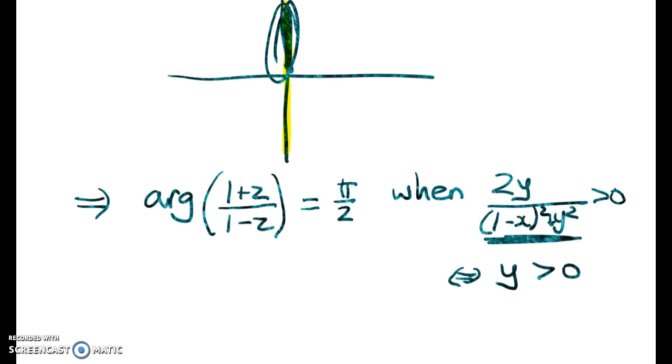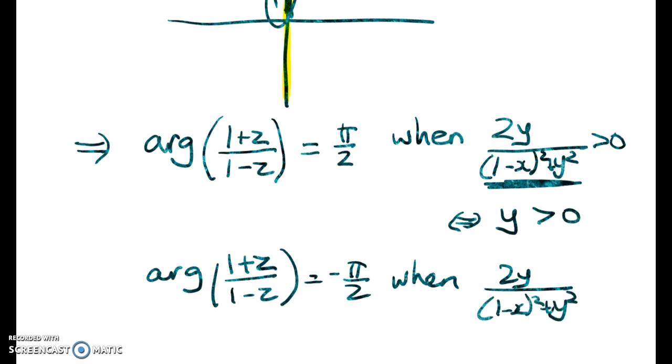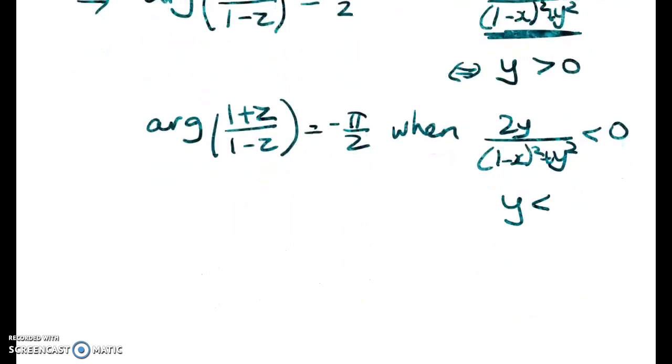Well, that's going to happen when y is greater than 0 because all of that denominator is positive. Right, I've got a squared thing plus a square thing. And when will the argument be negative π/2? Negative π/2 when 2y over that is negative, which happens when y is less than 0.